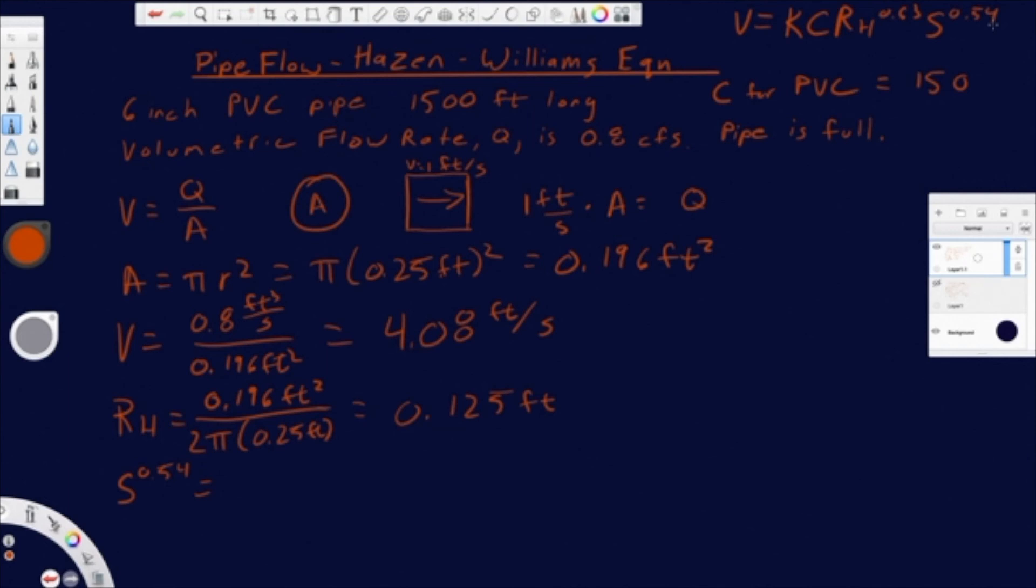And so we have our velocity over basically everything else. We have our K value, 1.318. We have our C value, our roughness coefficient. And then we have our hydraulic radius. So we're going to add this to the 0.63. And so that's going to be 0.076. Invert the exponent. And so that's going to be equal to 0.0086 feet per feet.